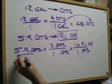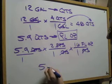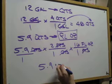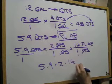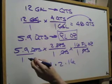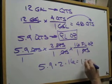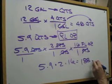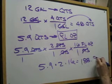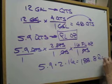And then I just put that over 1, multiply my numerators, 5.9 times 2 times 16. And that will be over 1 times 1 times 1. So in this case, we have 188.8 fluid ounces.